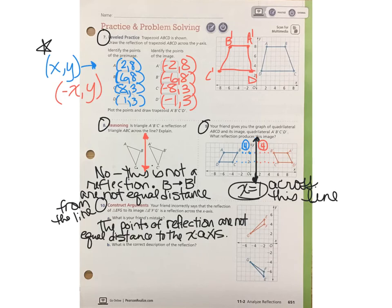The mistake that my friend made was that the points of reflection are not equal distance to the x-axis. So in part B, we need to describe what is the correct description of that reflection.